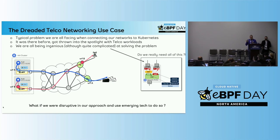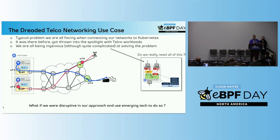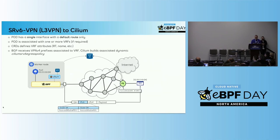That brings me back to the dreaded telco networking use case. This is how we actually have to deal with networking right now in a Kubernetes world. Most of our applications need to talk to multiple domains. We don't know how to do it easily in Kubernetes. We create an insane amount of complexity with Multus, multi-CNI, trying to do those kinds of hacks. We still haven't figured out how to connect a Kubernetes cluster to multiple environments. This became a spotlight issue when telcos started thinking about using Kubernetes. So when we engaged with the Isovalent team, we looked at how we could do something more disruptive — and this is where we went and did SRV6 VPN, or Layer 3 VPN, into Cilium.